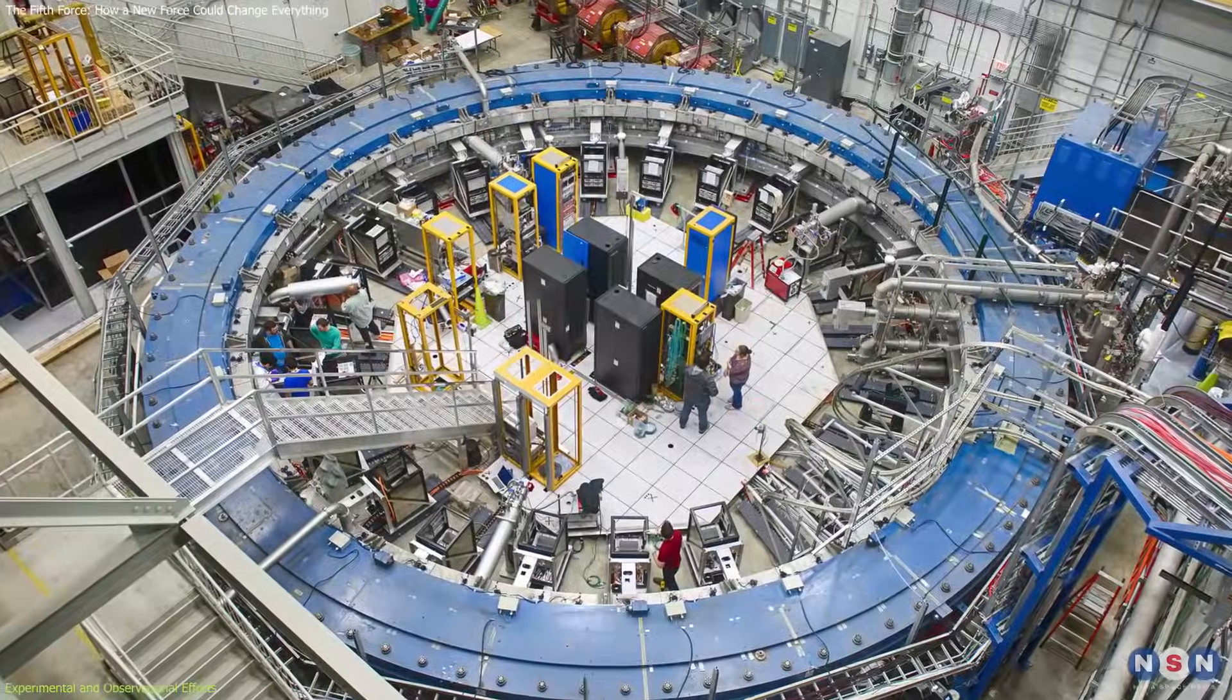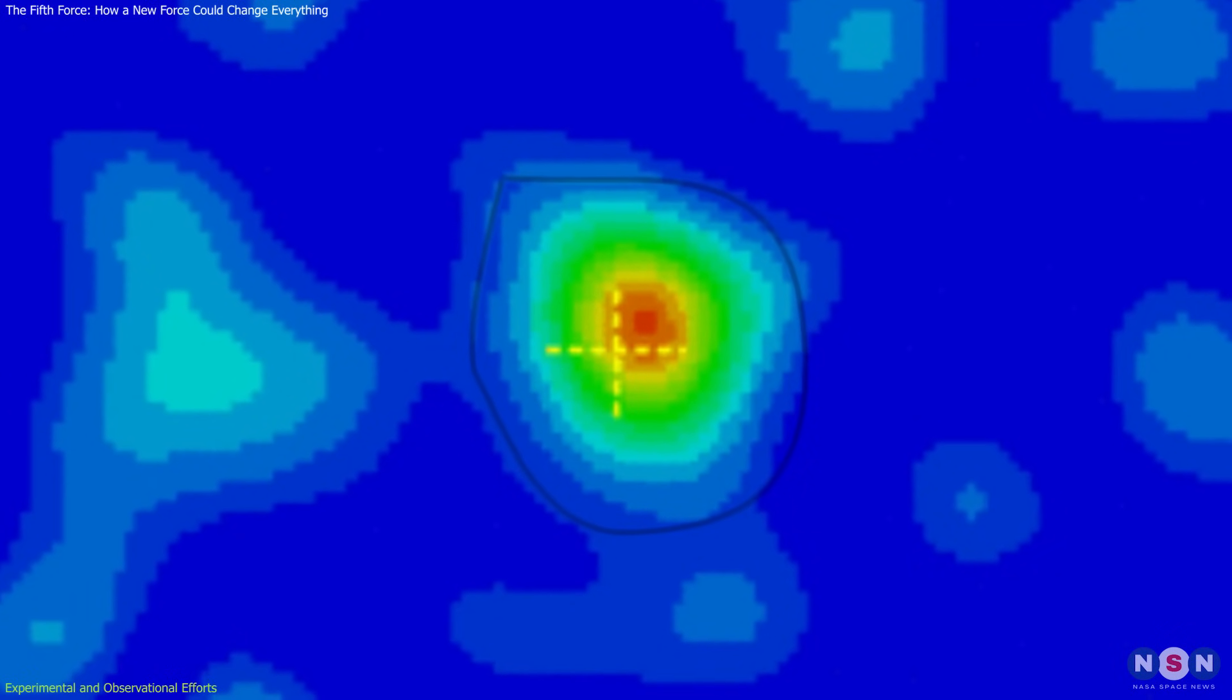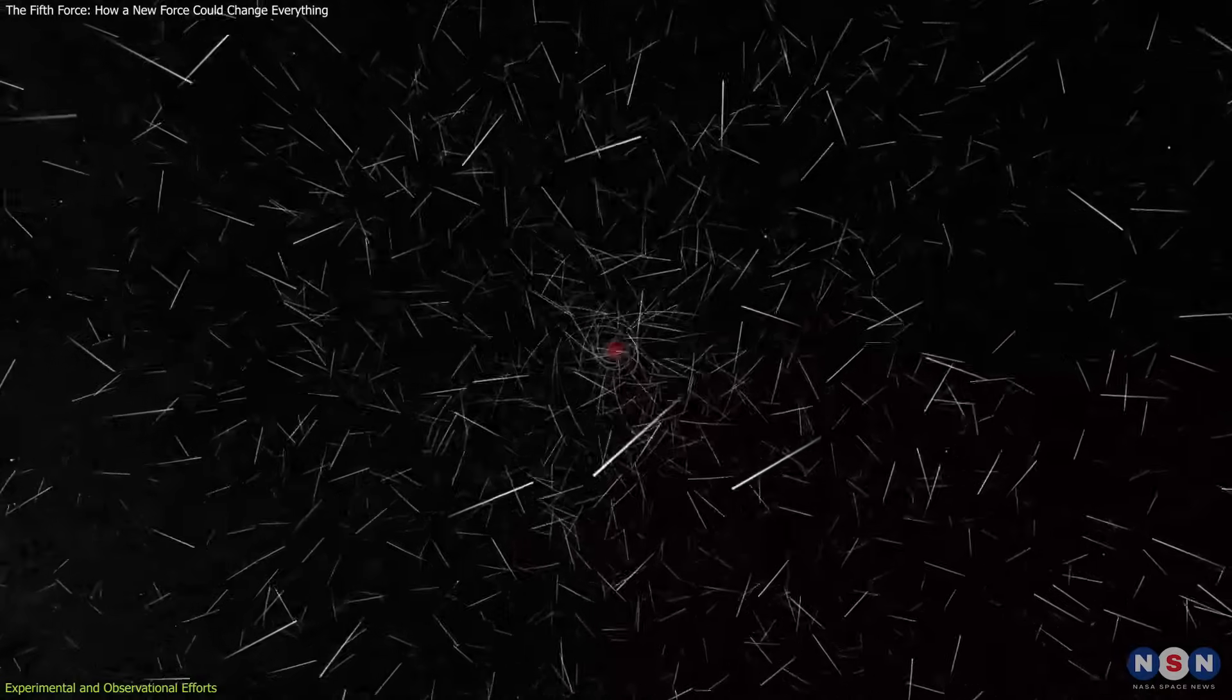In this experiment, muons are subjected to a magnetic field, causing them to wobble or precess. If a fifth force exists, it could introduce new virtual particles, altering the muon's precession rate.